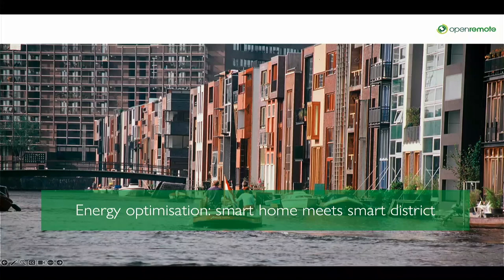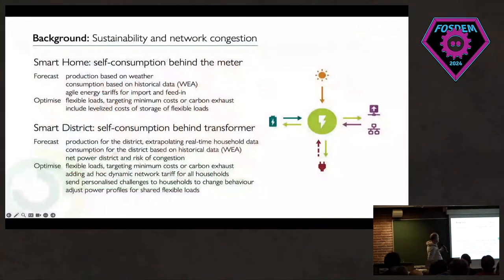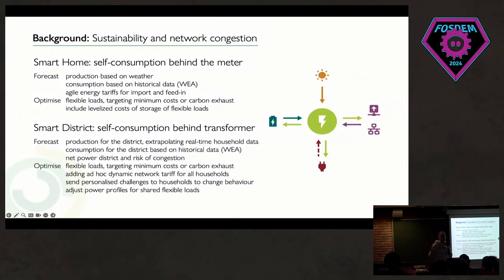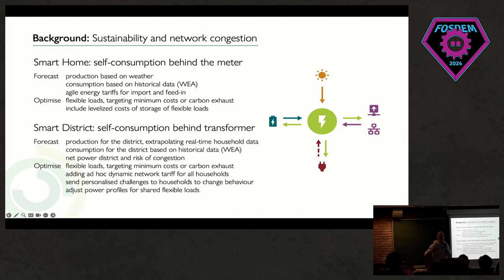Coming to energy optimization, we'll talk about two things. What we call smart home — but it can very well be a smart office or even an office complex — is basically the concept of an island behind a meter, where you have a sole proprietor of the island. When you move to the smart district, it's a composition of many islands behind one transformer. The problems are a bit different, but the system is the same.